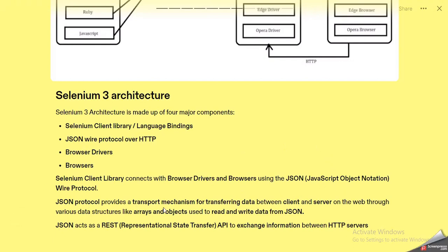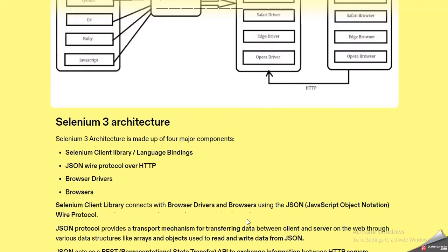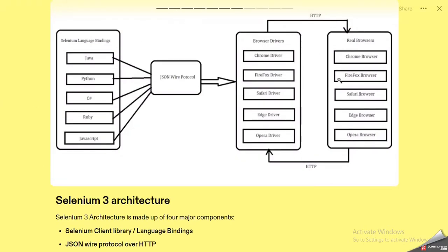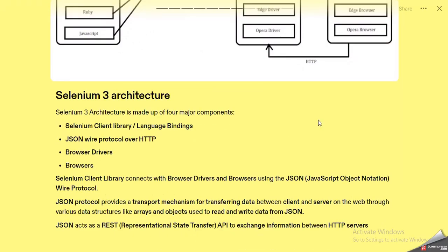The JSON Wire Protocol provides a transport mechanism for transferring data between client and server on the web through various data structures like arrays and objects used to read and write data from JSON. JSON works basically as a REST (Representational State Transfer) API to exchange information between HTTP servers. There is also one limitation that has been overcome in the Selenium 4 architecture.